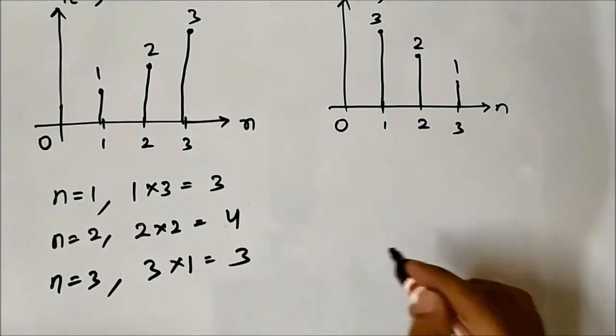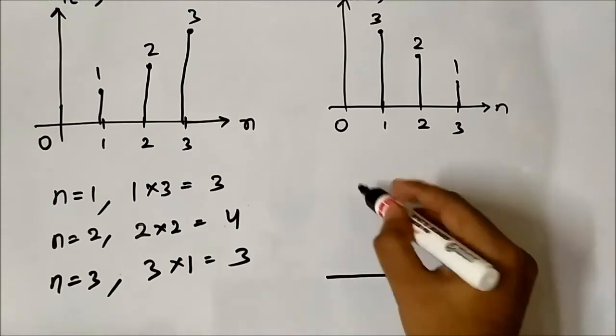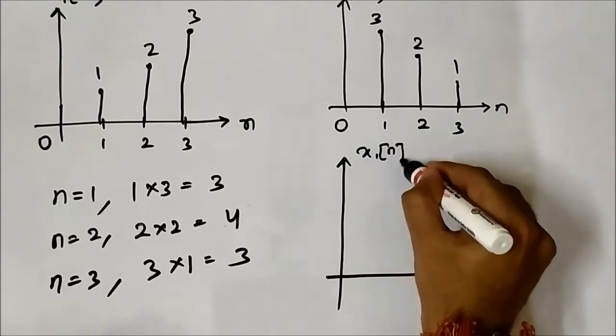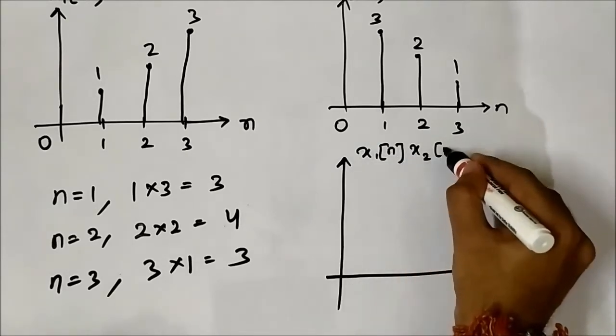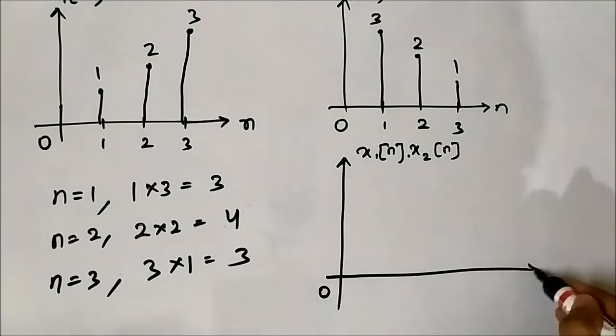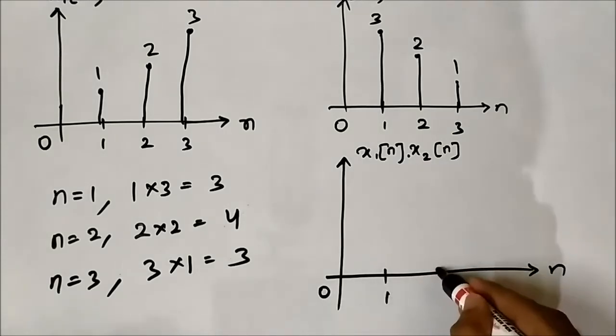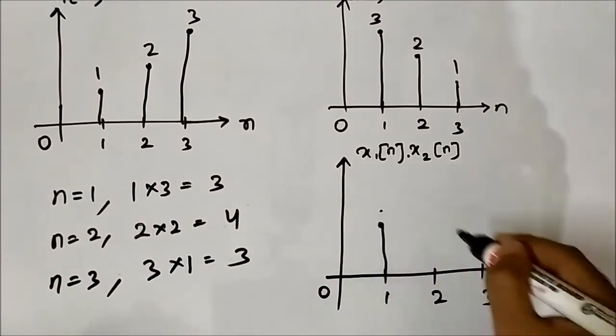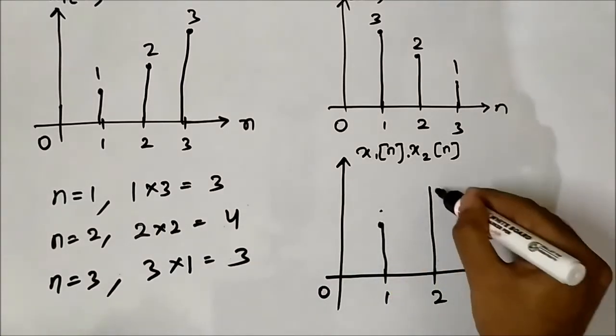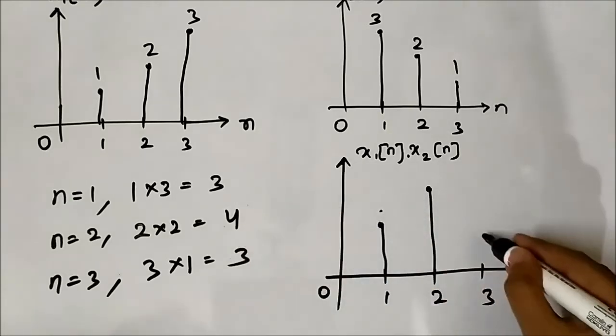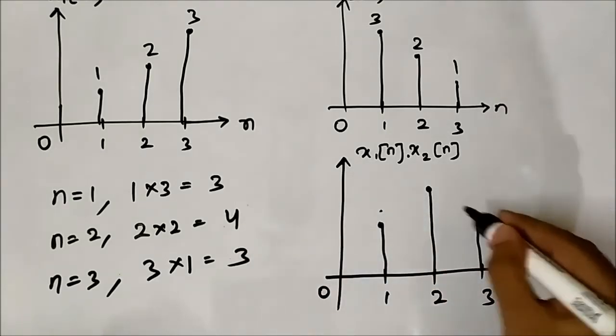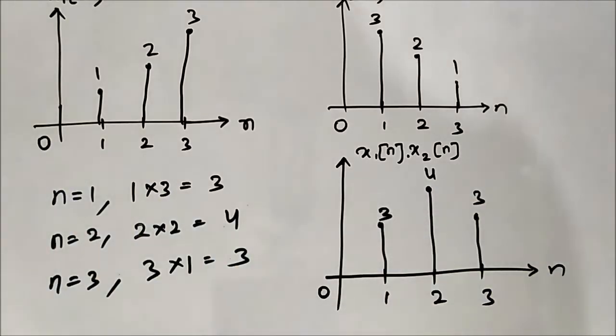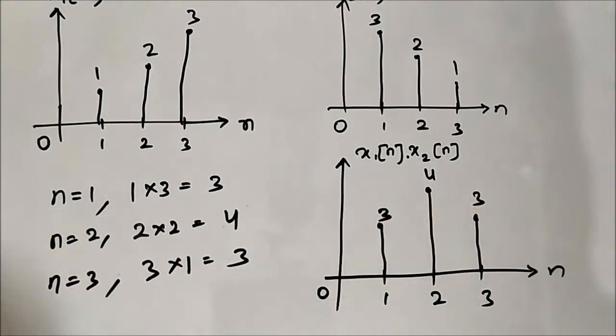So the resultant discrete time signal will be x1[n] times x2[n]. At 1 it is 3, at 2 it is 4, at 3 it is 3. So this is the resultant signal.